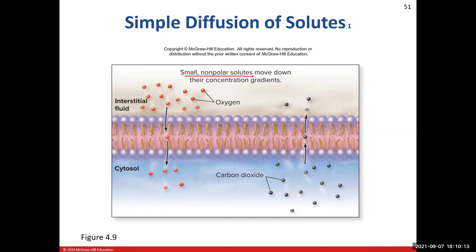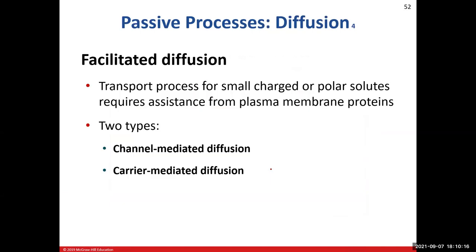Simple diffusion deals only with solutes — not water — and those solutes need to be small and non-polar. The other type of diffusion is facilitated diffusion, which requires assistance from plasma membrane proteins. The solutes involved can be small but charged, like ions such as sodium or potassium, or they can be polar. Charged or polar solutes need help, and plasma membrane proteins come to the rescue.